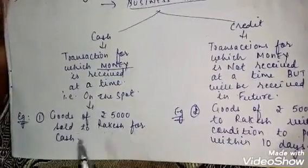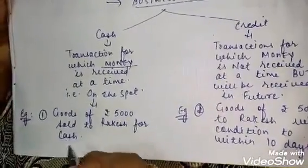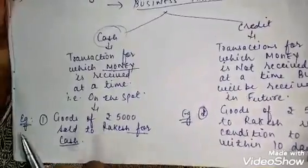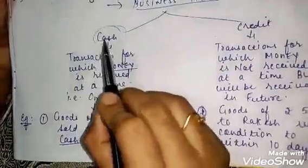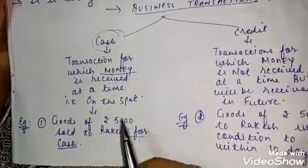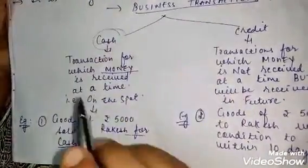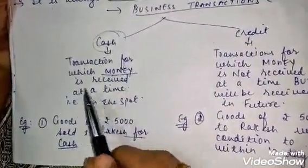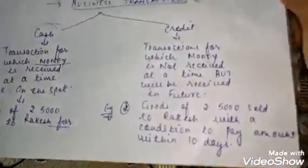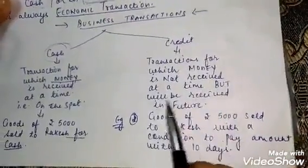Example of a cash transaction: 'Goods worth 5,000 sold to Rakesh for cash.' The word 'cash' is specifically written here, which means this is a cash transaction — Rakesh paid on the spot. A credit transaction is one for which money is not received at the time of the transaction but will be received in the future.